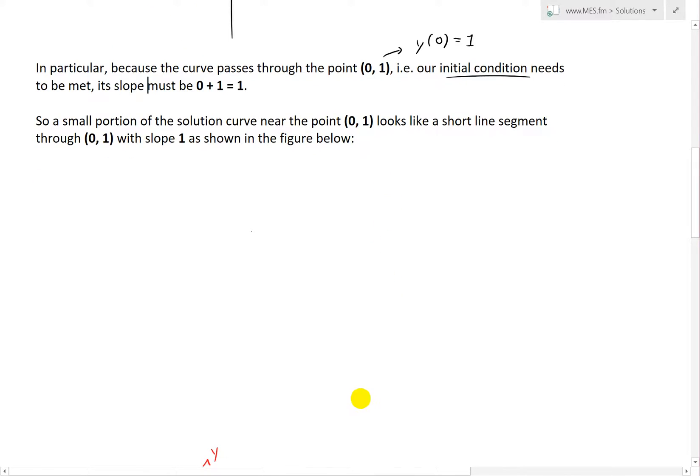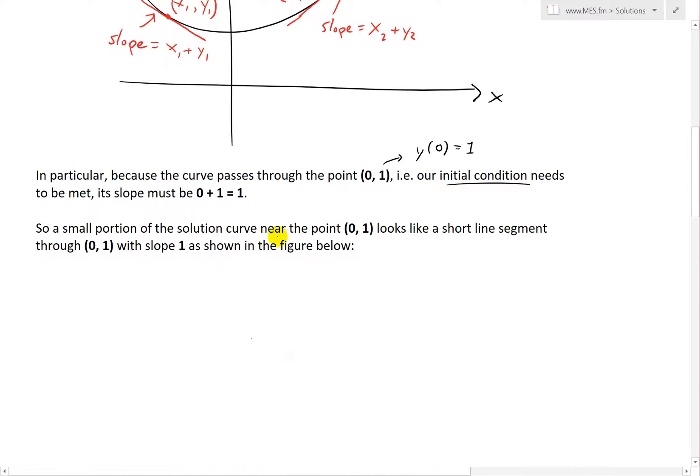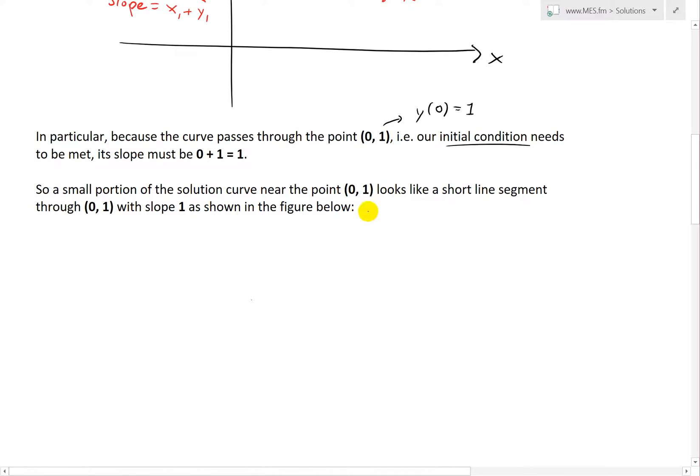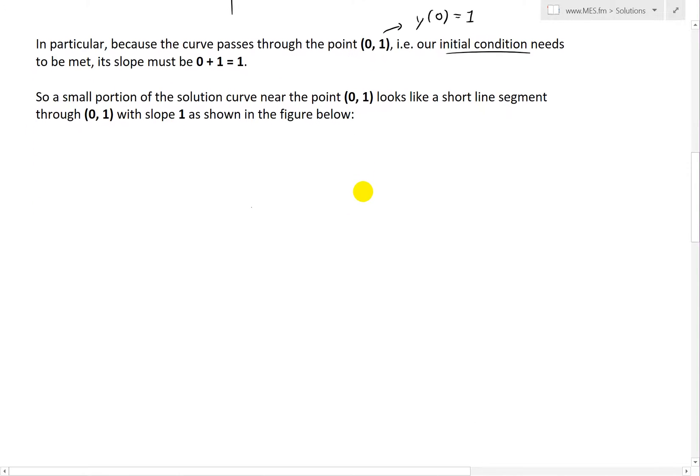So what we could do is look at a small portion of the solution curve near this point (0, 1), because it passes through it. What I'll do right here is basically draw it out. It would look like a short line segment through this point (0, 1) with slope 1. If we were to draw a small line segment, we know it's going to look something like this because it has a positive slope, and the slope is equal to 0 + 1, which is 1.